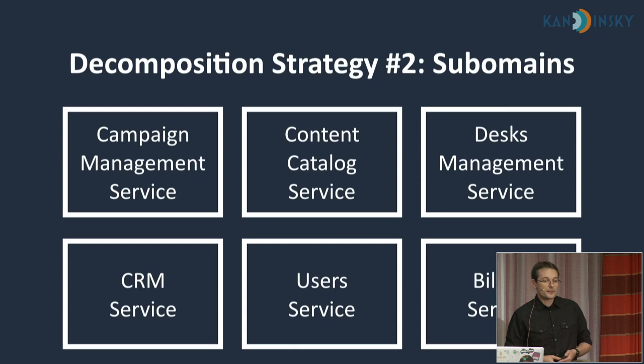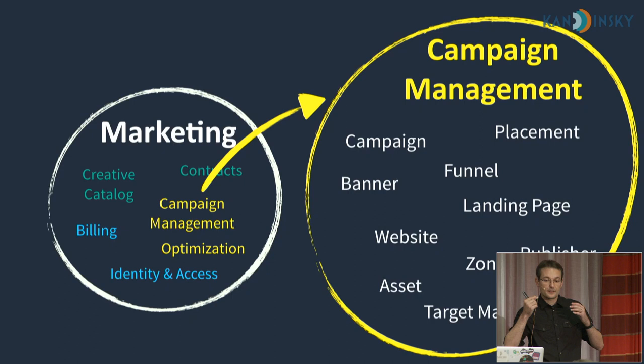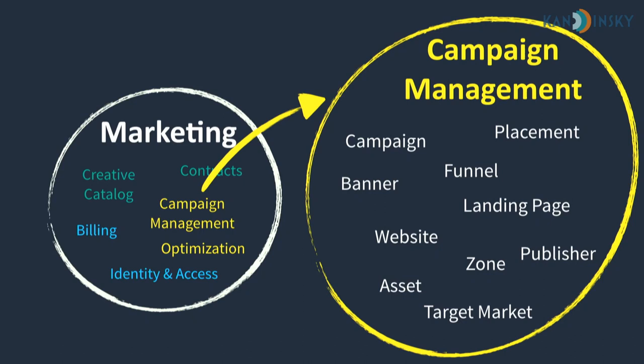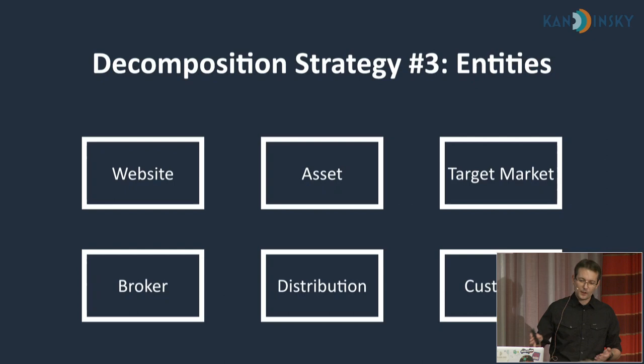When we embarked on the microservices adventure, we strived for even smaller services. We dug deeper into business domains and extracted their entities and processes into their own microservices. For example, in our campaign management subdomain, we had business entities such as campaign, funnel, target market, and others — and we used those entities as boundaries. That was our third decomposition strategy: having each service represent one business entity or process. Initially this approach failed miserably for us, but it did work later in other projects.